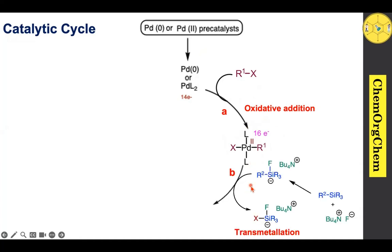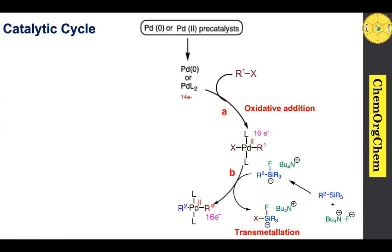This 16-electron species undergoes transmetallation with the silane reagent. The organohalide initially reacts with fluoride ion sources, which act as activators, to produce a penta-coordinate silicate species. This penta-coordinate species is the actual transmetallating reagent in this reaction, which undergoes transmetallation with the palladium species to produce a new 16-electron species.